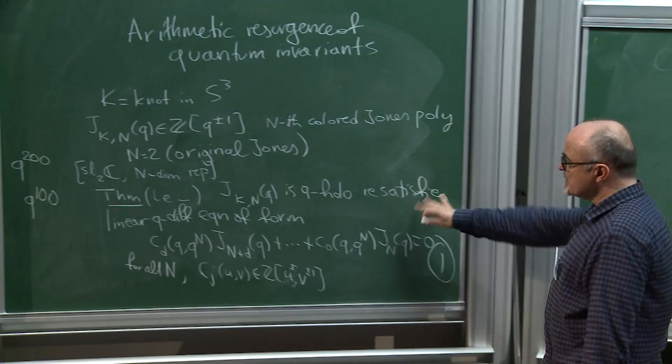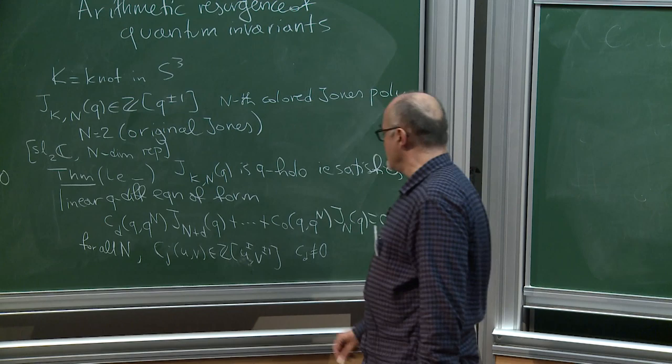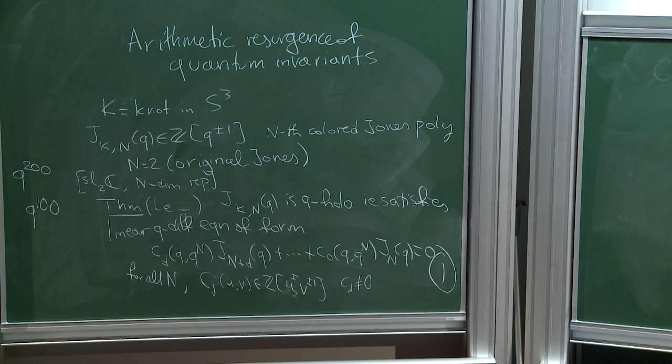How unique are the c_j's? First, c_d should not be zero. Among all Q-difference equations, there is a unique minimal-order one, and that defines the so-called A-hat polynomial, which annihilates the colored Jones and is itself a knot invariant.